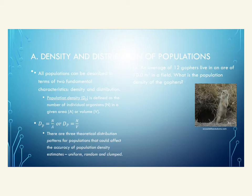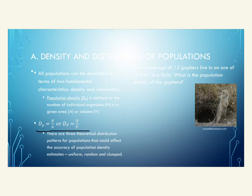We'll get started by looking at density and distribution of populations. All populations can be described in terms of two fundamental characteristics: density and distribution. There are a few formulas in this section. The first is the formula for population density, defined as the number of individual organisms — represented by N — in any given area or volume. The formula is: dp = N/A or N/V.